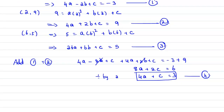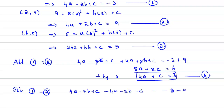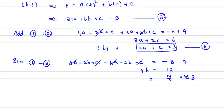Subtracting equation 2 from equation 1: (4a - 2b + c) - (4a + 2b + c) = -3 - 9. The 4a and c terms cancel, giving -4b = -12, so b = 12/4 = 3. Hence the value of b is 3.